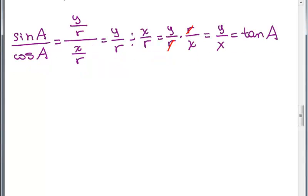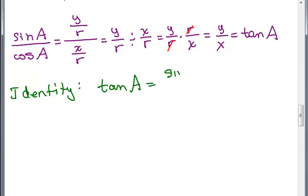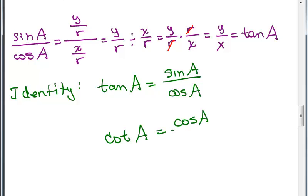We have another identity: tangent of A can be written as sine of A over cosine of A. Since tangent and cotangent are reciprocals of each other, you could start with cosine of A over sine of A and do the same process. You will find that cotangent of A equals cosine of A over sine of A. In other words, taking the reciprocal of the tangent gives you the cotangent, so the answer is the reciprocal of sine A over cosine A.